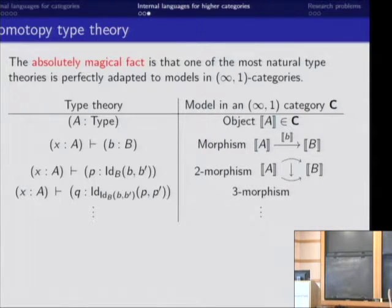Because what we have is these things called intensional identity types, which one or two people have mentioned before. And these correspond exactly to these higher morphisms. So an ordinary term corresponds to a morphism. A term inhabiting an identity type is a 2-morphism. An iterated identity type is a 3-morphism, and so on.